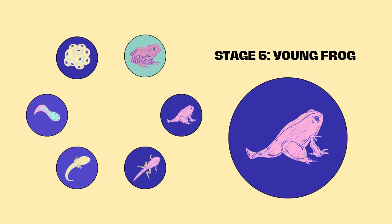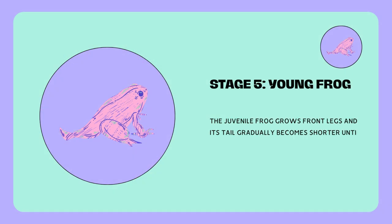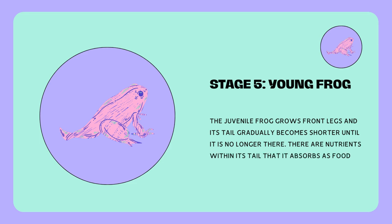Stage 5: Young Frog. The juvenile frog grows front legs, and its tail gradually becomes shorter until it is no longer there. There are nutrients within its tail that it absorbs as food.